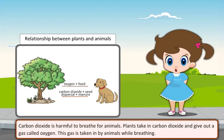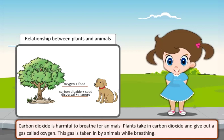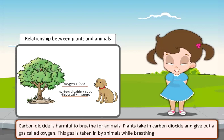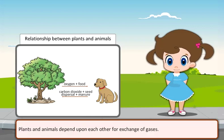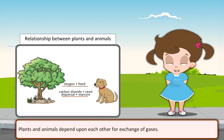Carbon dioxide is harmful to breathe for animals. Plants take in carbon dioxide and give out a gas called oxygen, which is taken in by animals while breathing. Plants and animals depend upon each other for exchange of gases.